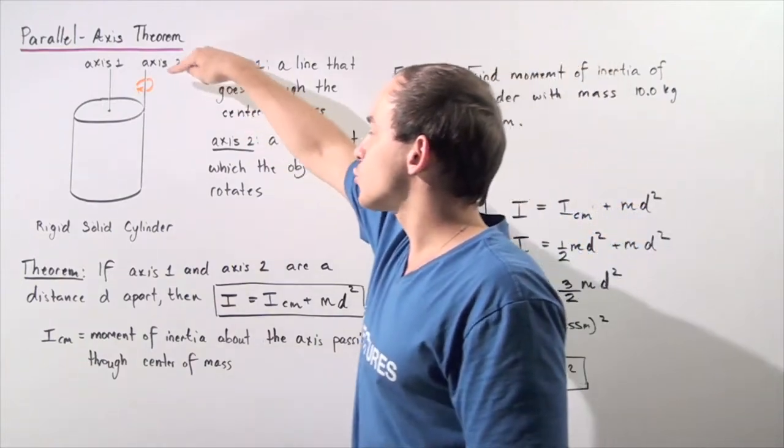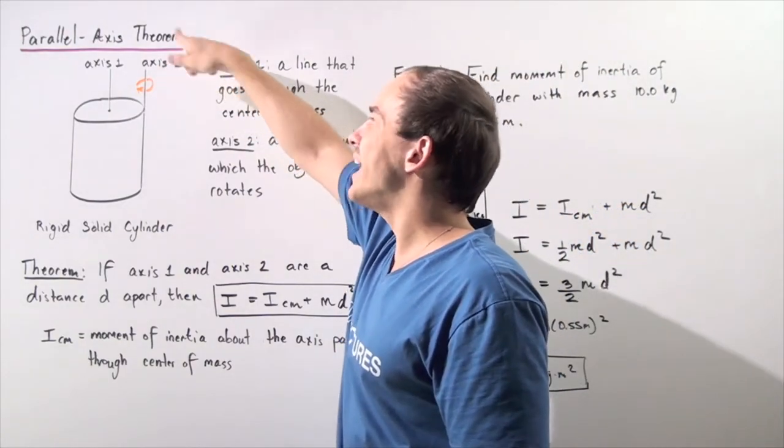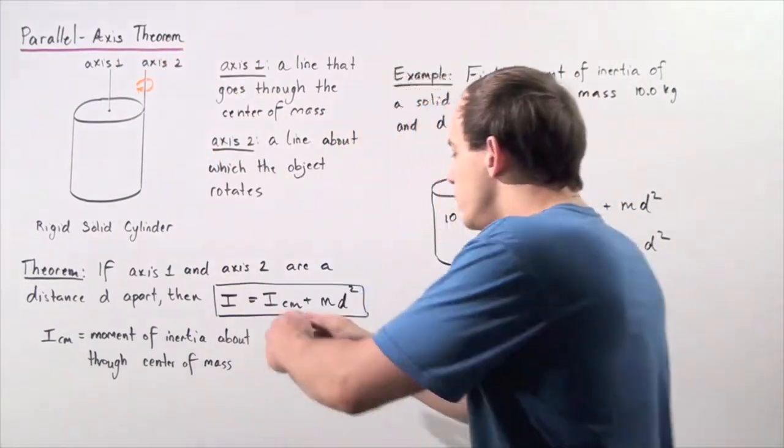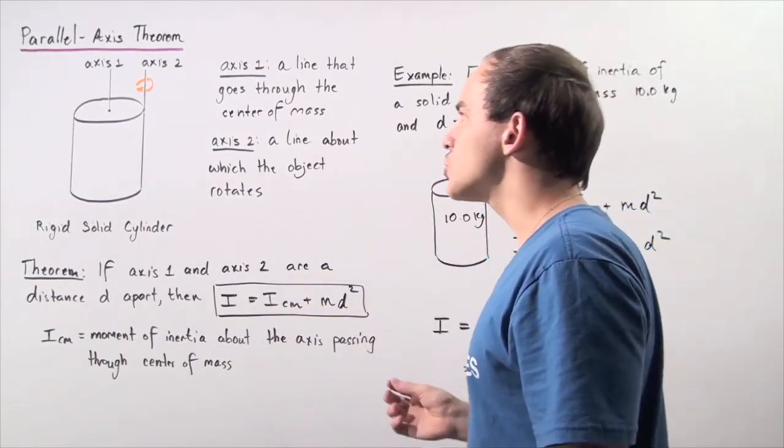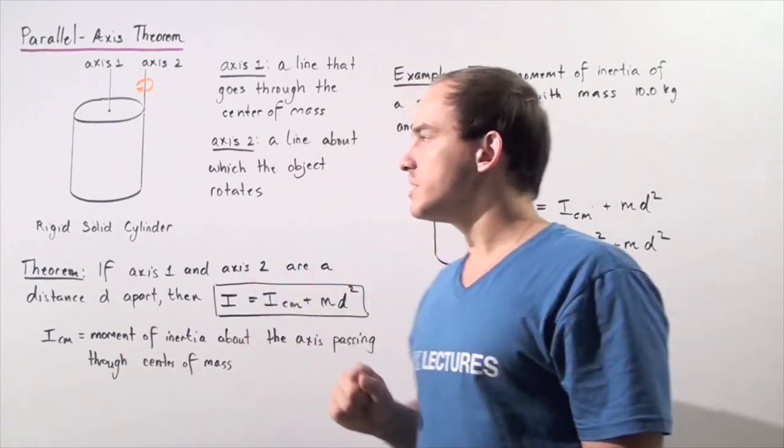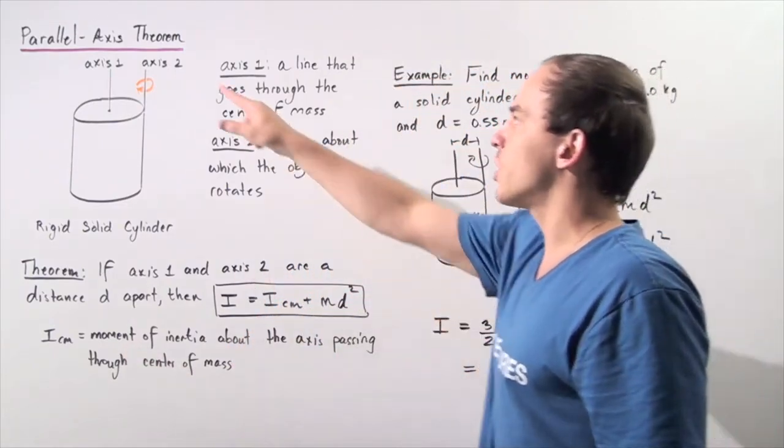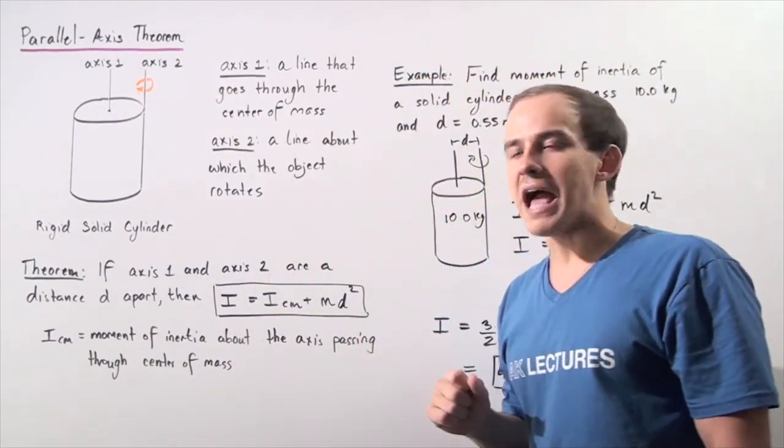Now because the object is rotating about axis number two and not axis number one, we can use the following formula to help us find the moment of inertia. Let's look at one such example in which we're going to apply the parallel axis theorem.